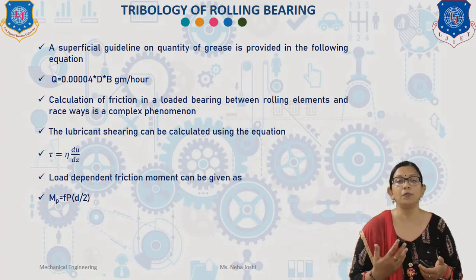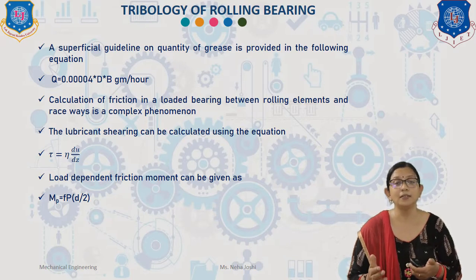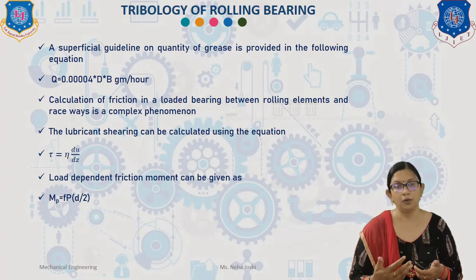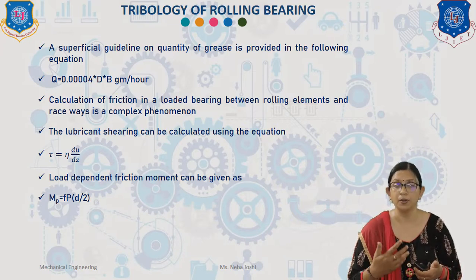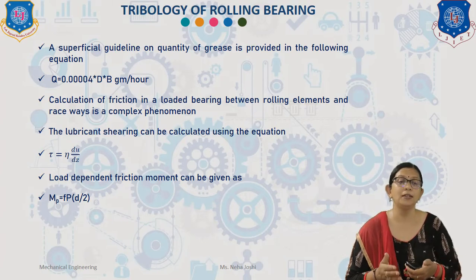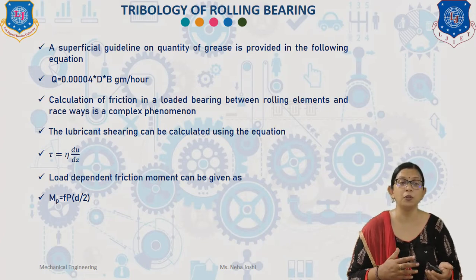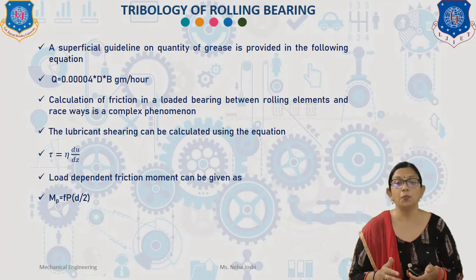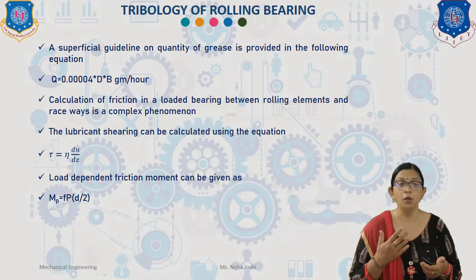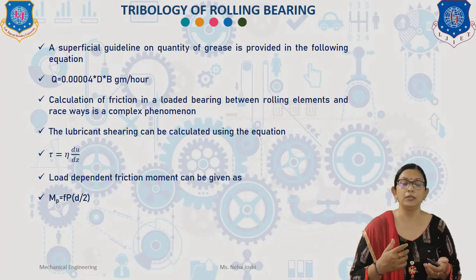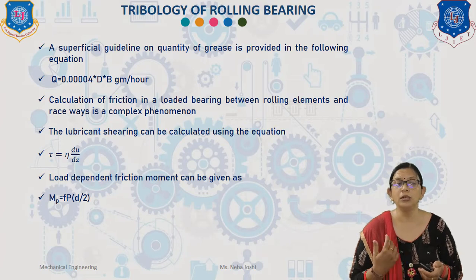Calculation of friction in a loaded bearing between rolling elements and raceway is a complex phenomenon. Elastic hysteresis, sliding, lubricant shearing, and mechanical contact of seals are the main contributors to friction in anti-friction bearings. The use of chrome steel in making rolling elements and rings minimizes the coefficient of friction. Lubricant shearing can be calculated by: τ = η · (du/dz). The load-dependent friction moment is given by: M_P = f · P · (d/2), where f is the coefficient of friction, P = √(FR² + Fs²) is the resultant load, and d is the bore diameter.